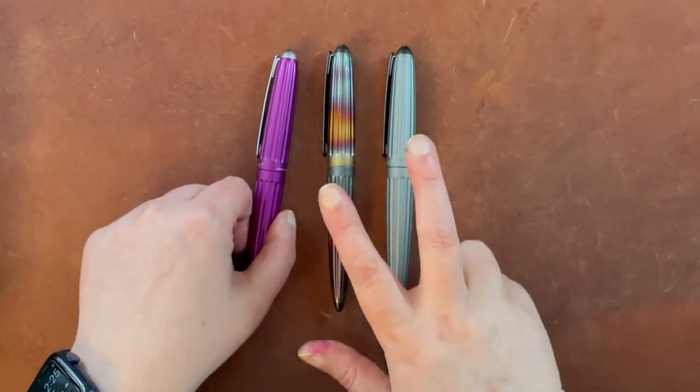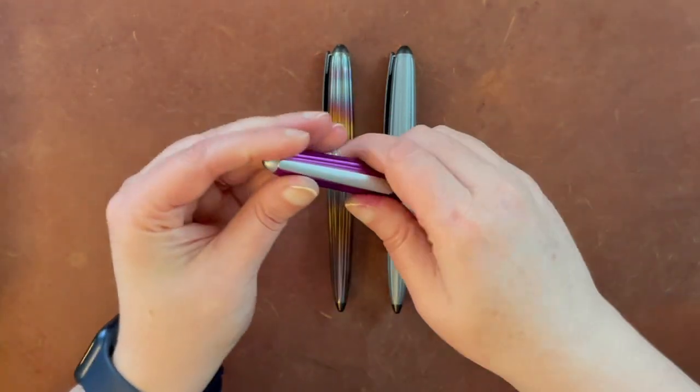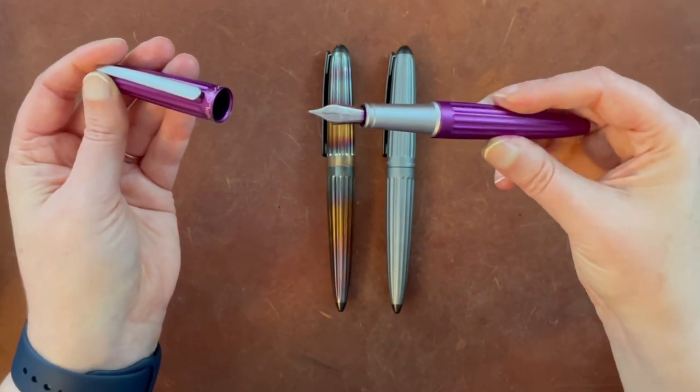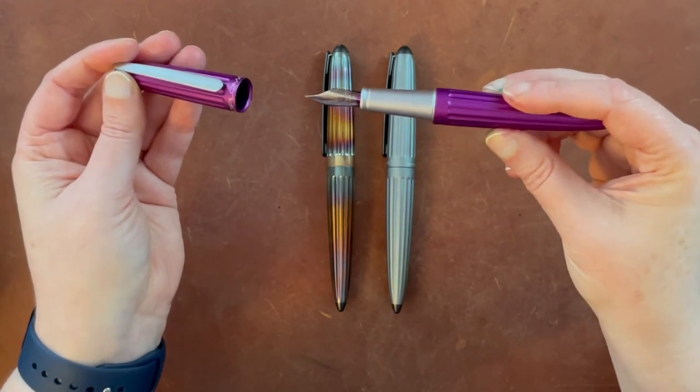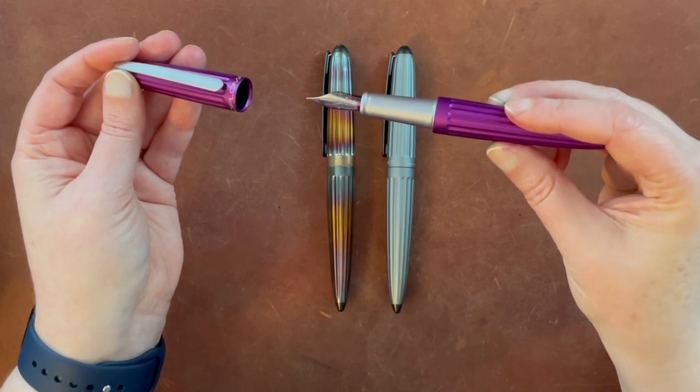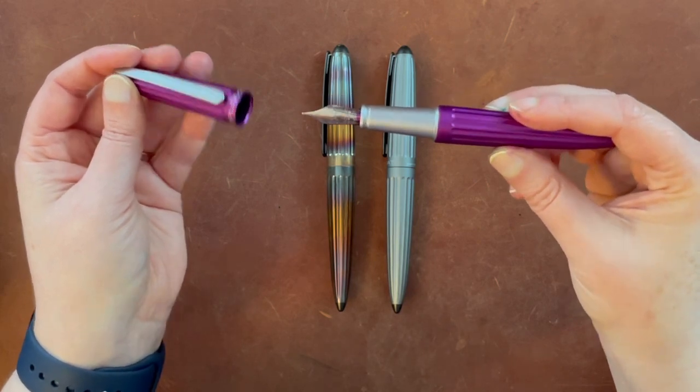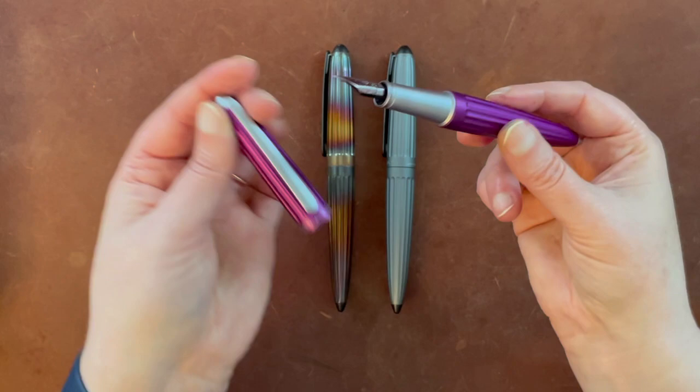So these are just regular nibs. This is a custom grind that I got from Goulet Pens. They had a custom grind in a fine cursive italic and medium cursive italic, which is what this one is.